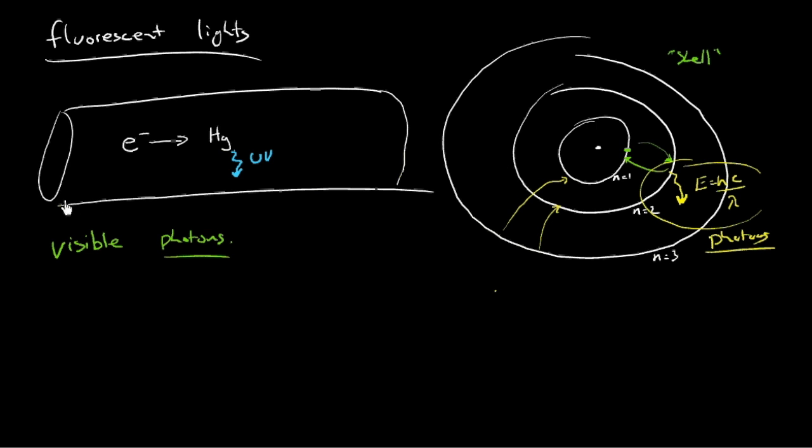So we need to somehow convert that ultraviolet photon into a photon that we can see with our human eyes. And so you may notice, if you've looked at a fluorescent tube, it has this sort of a translucent coating on it. It looks like there's some white paint on the inside of the tube. In fact, there is. It's actually called a phosphor.